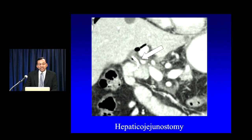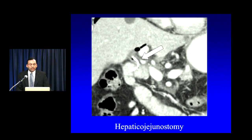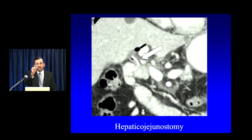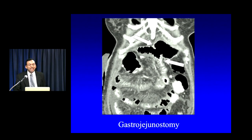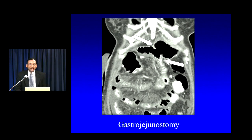In rare instances you'll see a stent traversing the hepaticojejunostomy, but this is not common. Typically you'll use gas within the biliary tree extending from the bile ducts into the jejunum to trace this anastomosis. Finally, the gastrojejunostomy is visible either in the axial or coronal plane and is typically the easiest of the three anastomoses to identify — you can nicely see the anastomosis between the stomach and the adjacent jejunum.